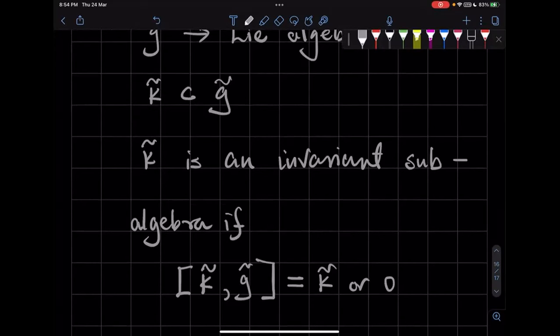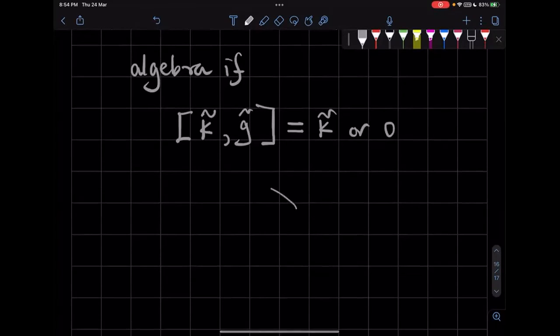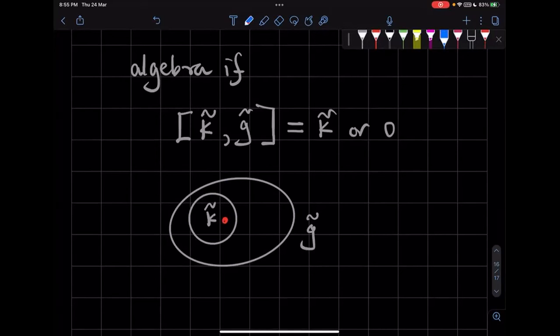Okay, so basically you have G̃ and K̃ is some subset, and the commutator of an element from K̃ and an element from G̃ takes you back into K̃. Okay, so the combination of these two things takes you back to K̃ or to zero. Okay, so then we call that K̃ is an invariant subalgebra.